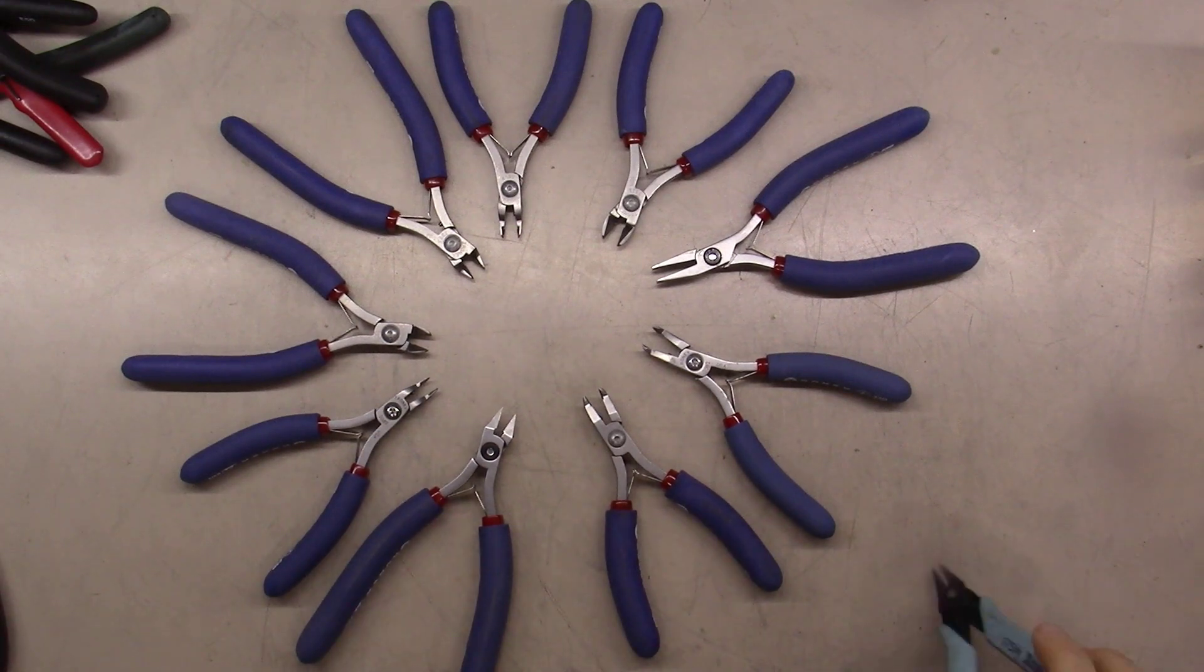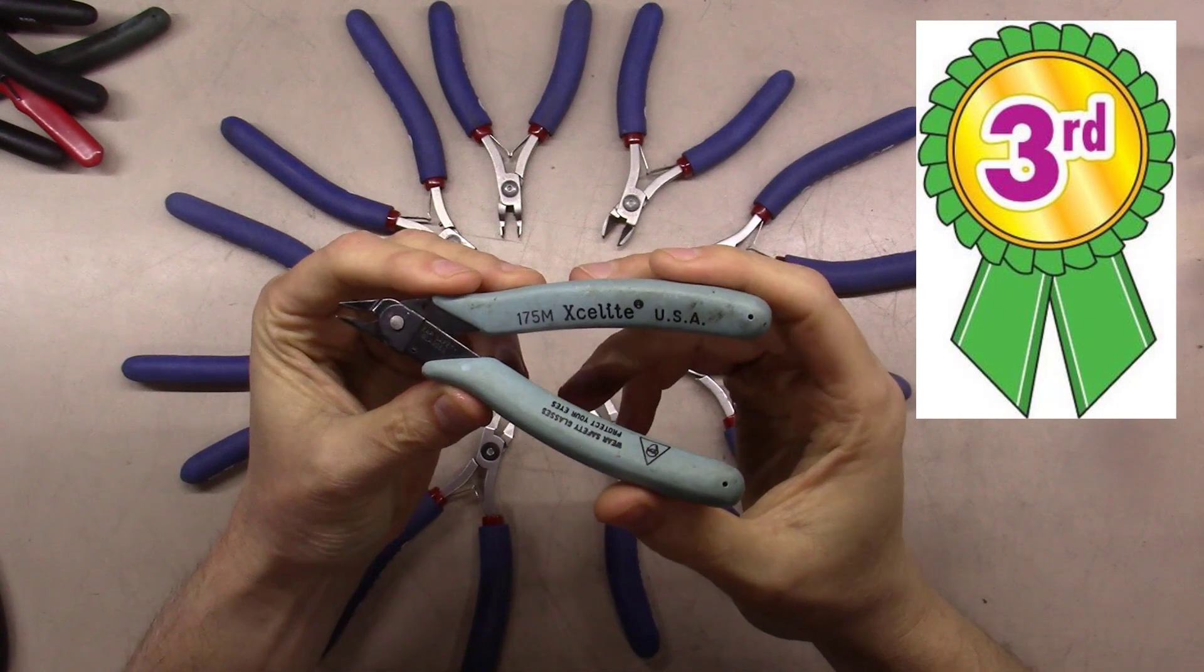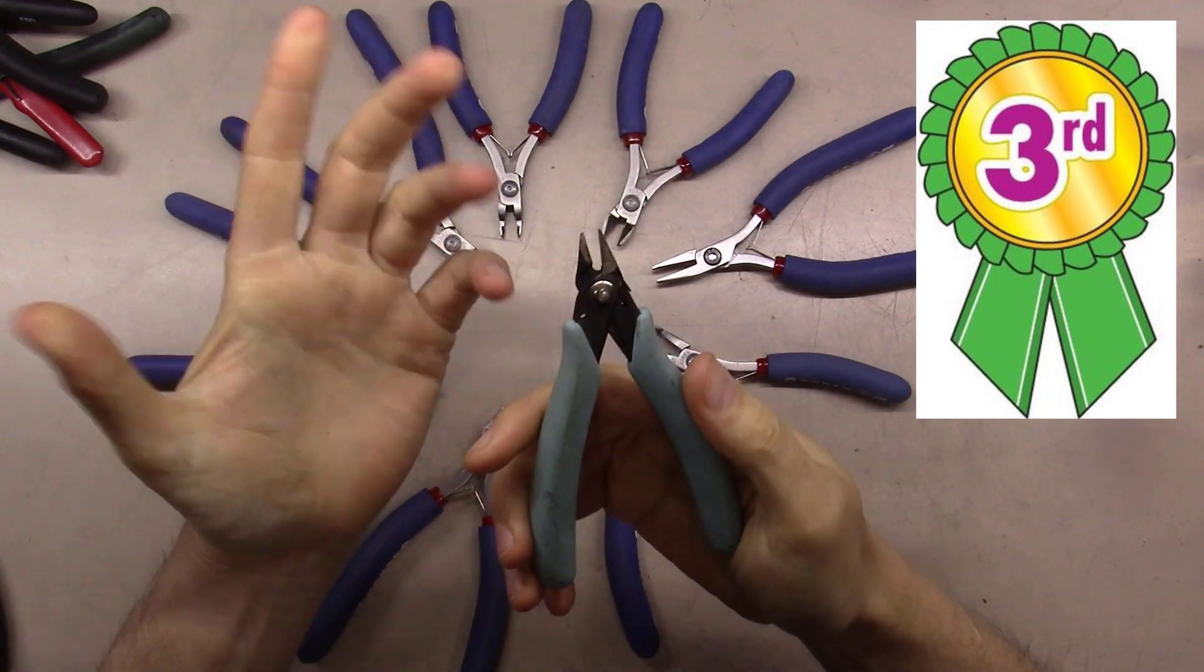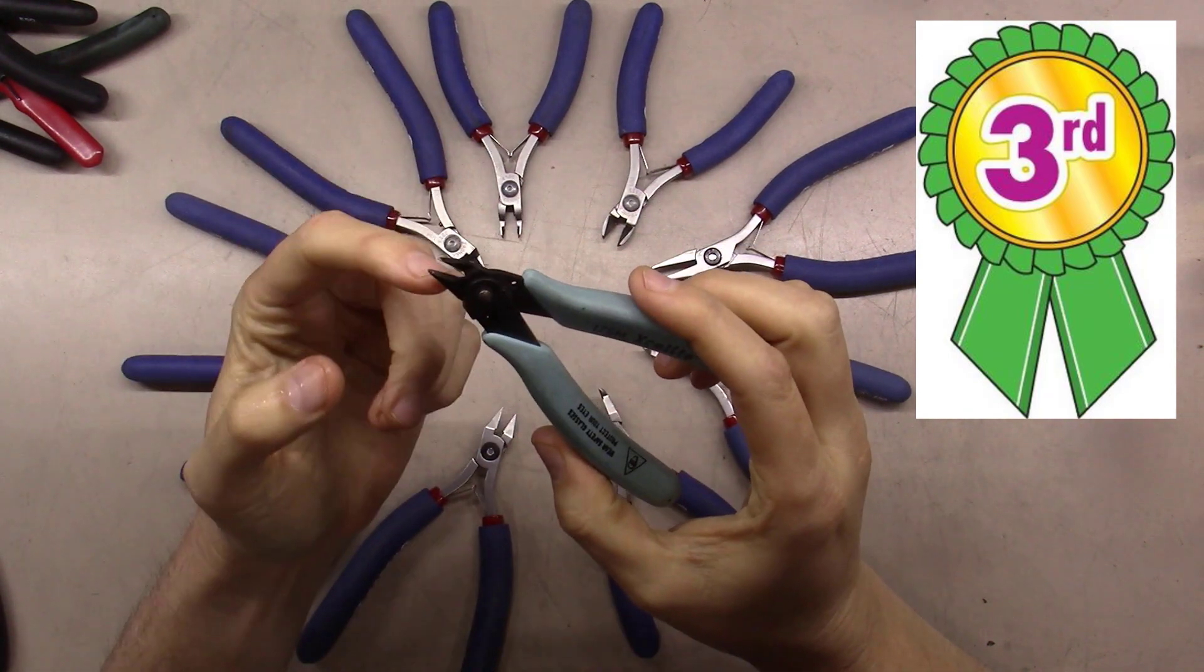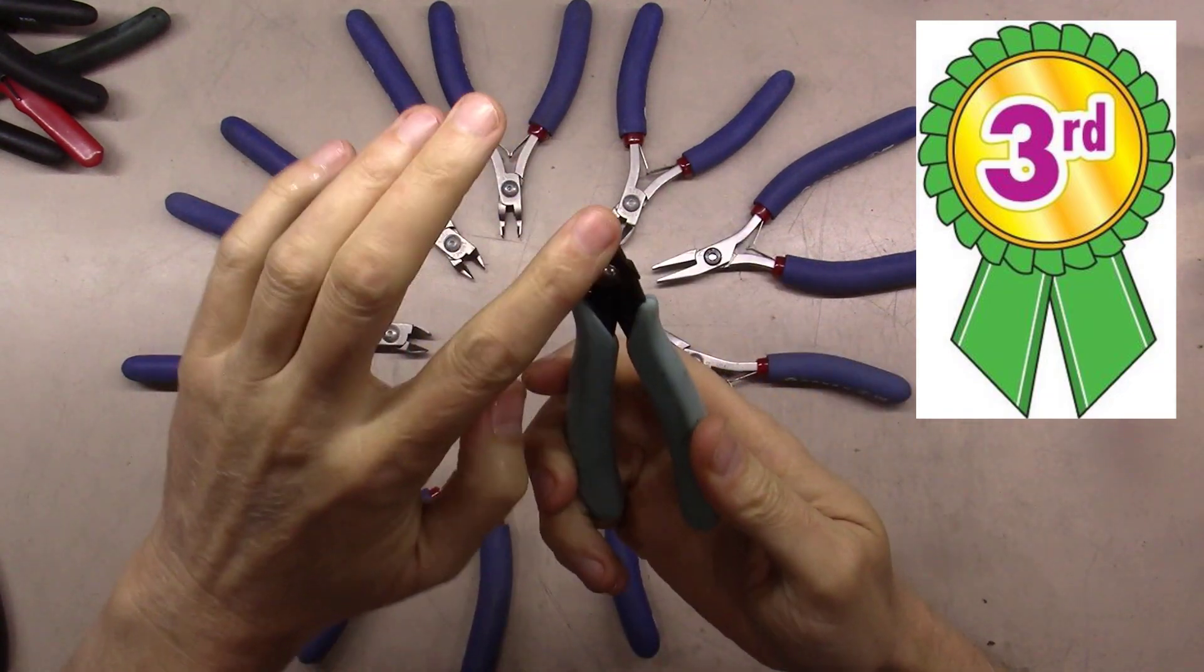So in our shootout of cutters today, I'm going to give third place here to these Excelite 175ms. They're still great cutters, they serve their purpose, they're low cost. You know, they're low cost enough to be consumable, so you ding one of them, you throw it away. And you can also try to repair them by grinding the backs off a little bit, maybe get another life or two out of them.